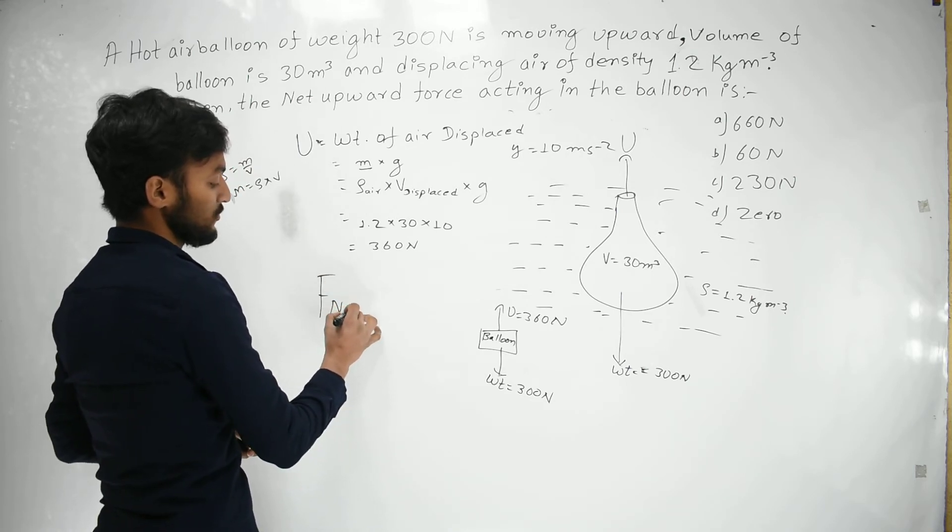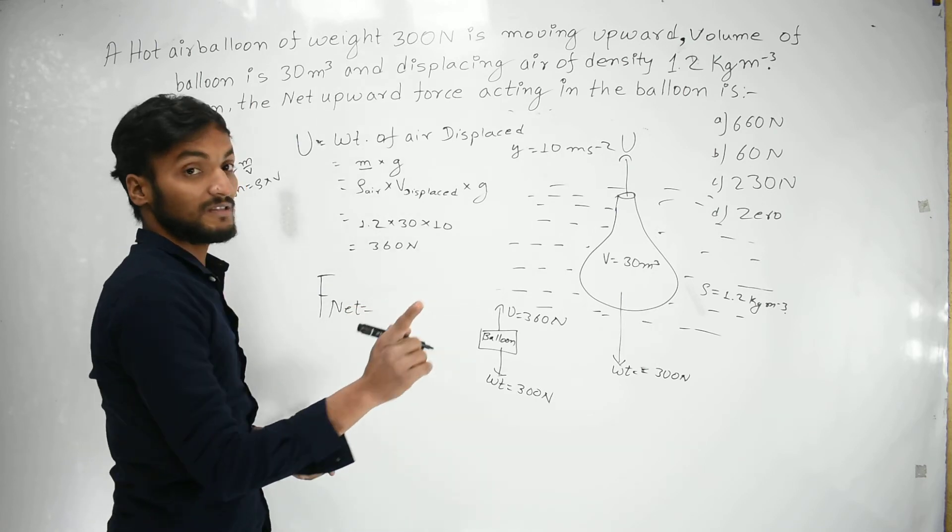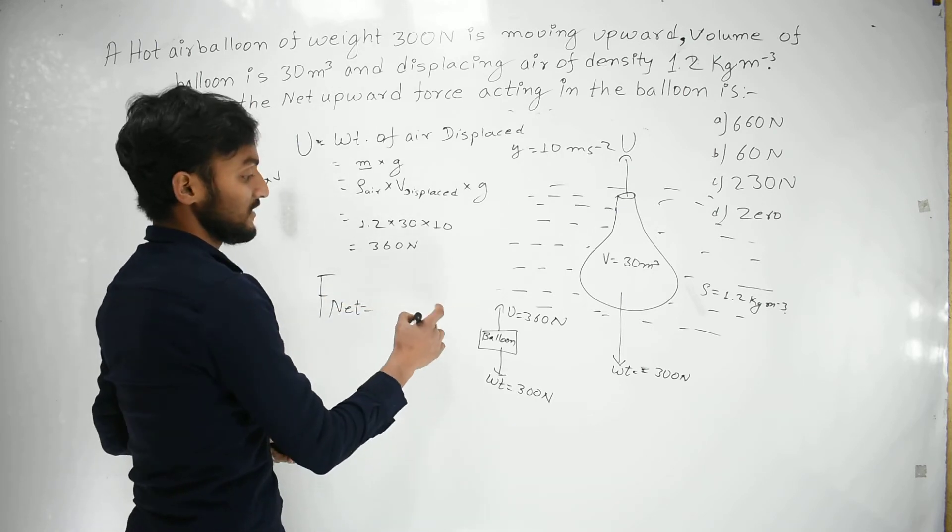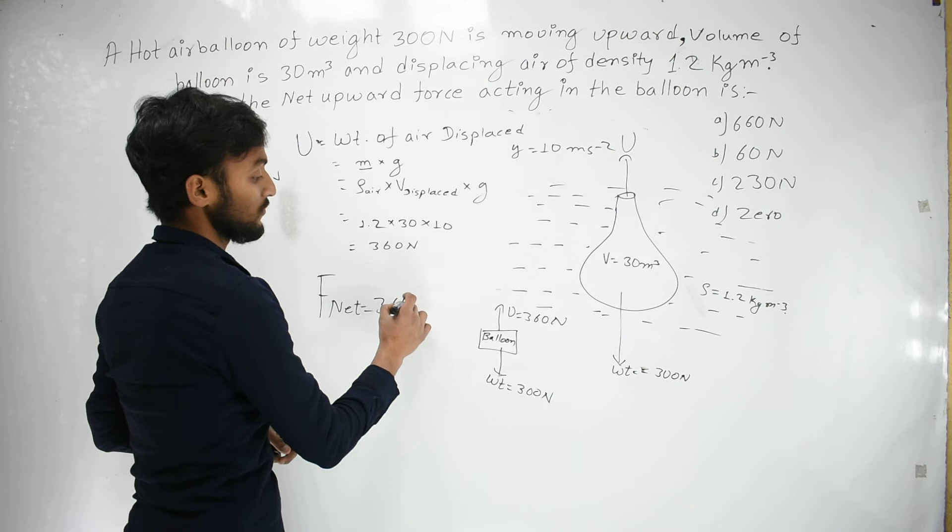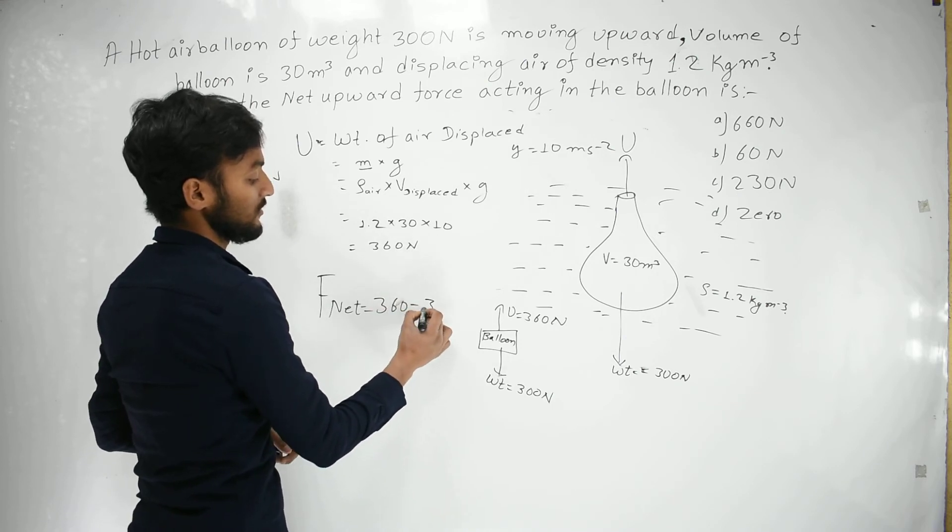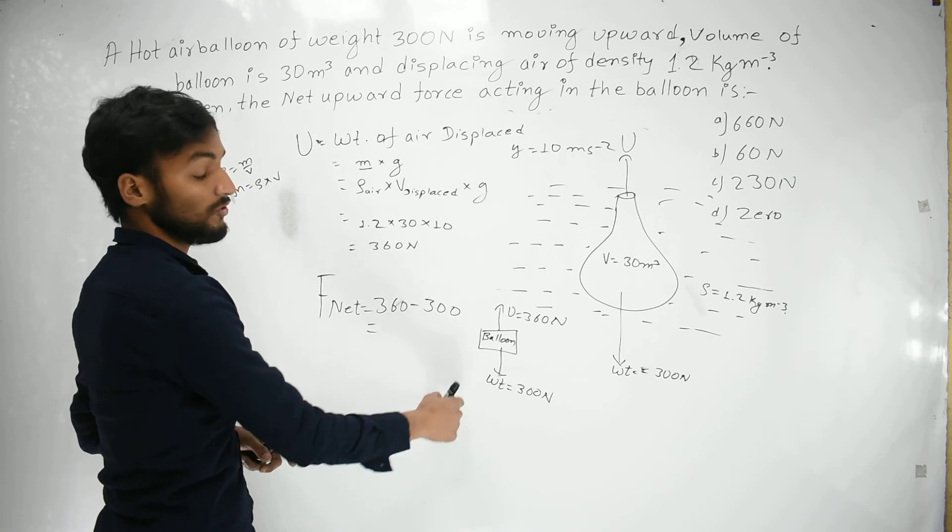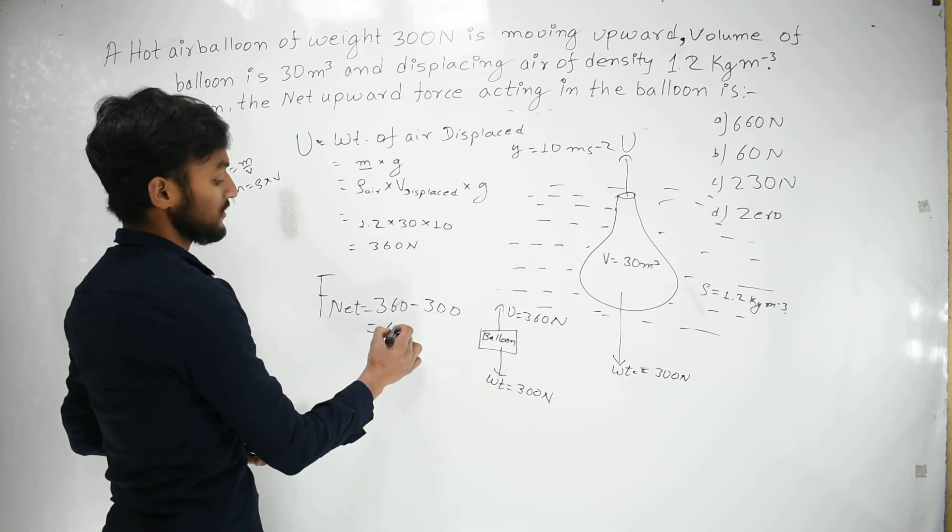In parallel, opposite direction, the net force is minus. Then upthrust force is 360, and the weight. The net force calculation.